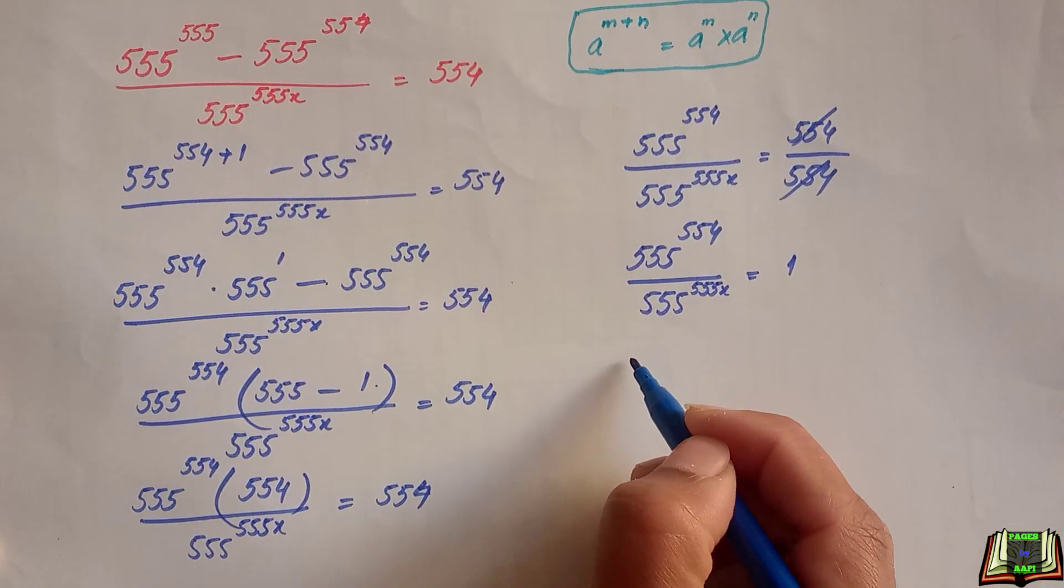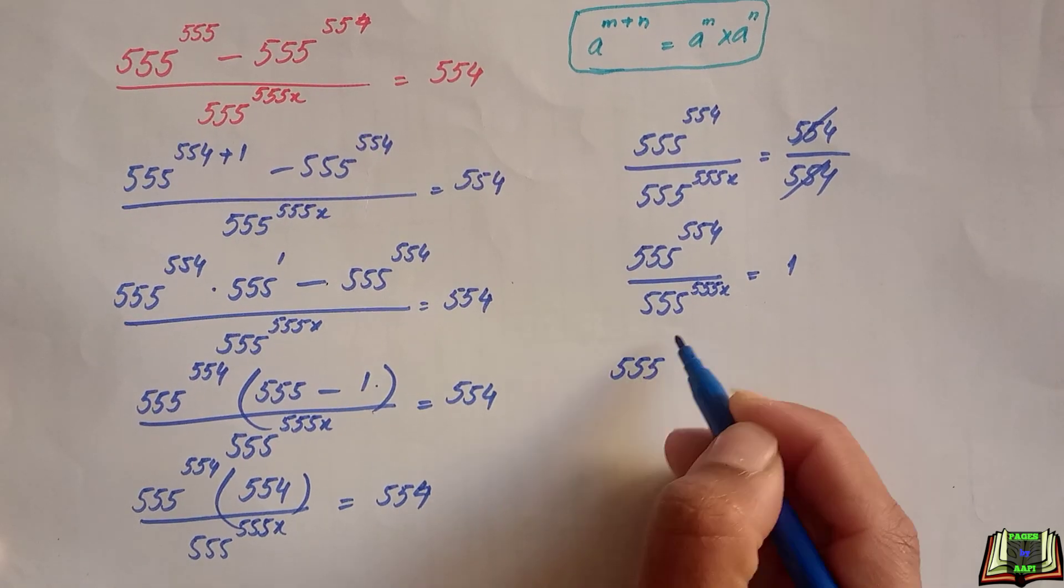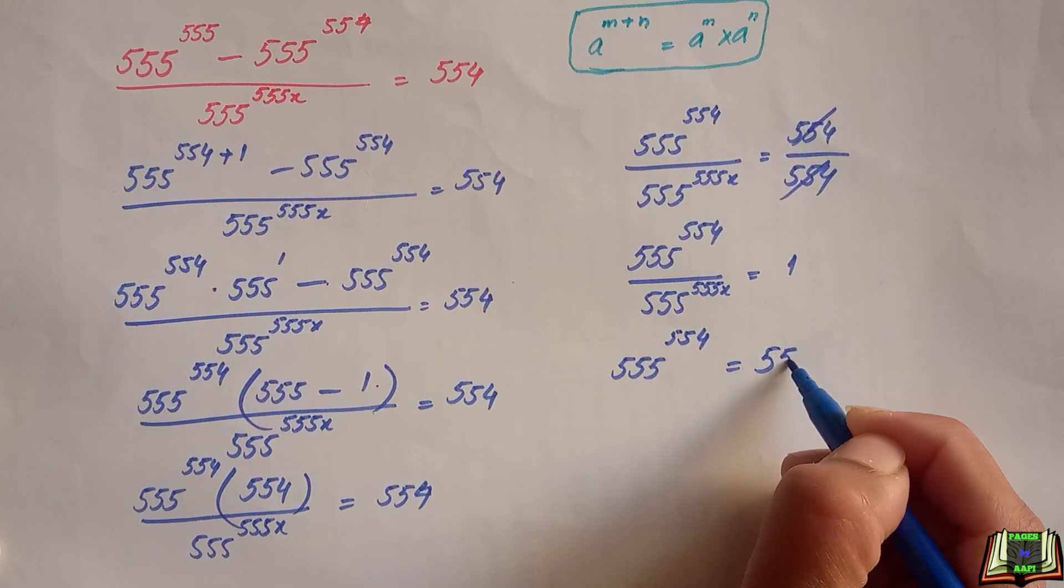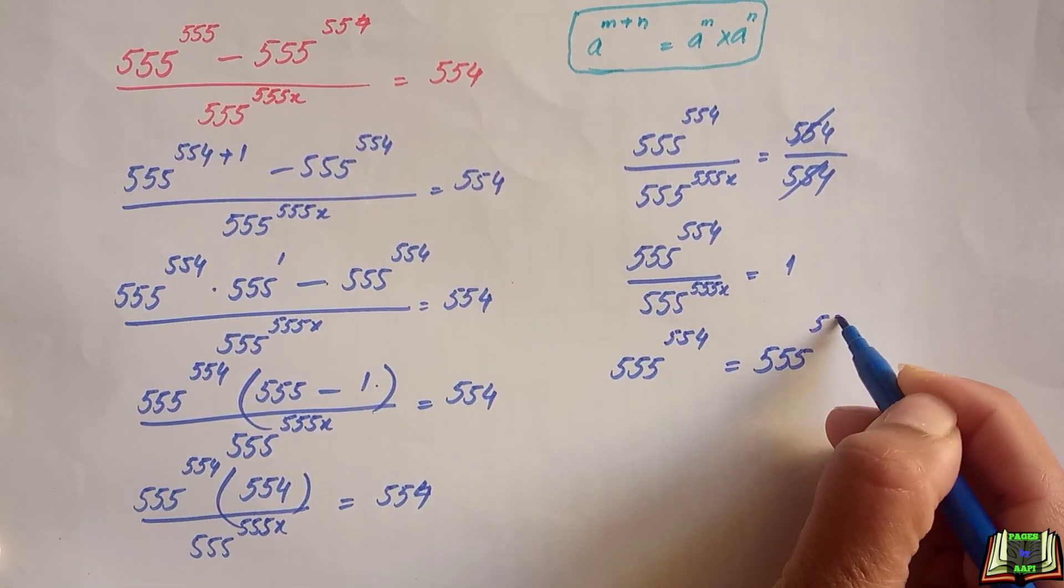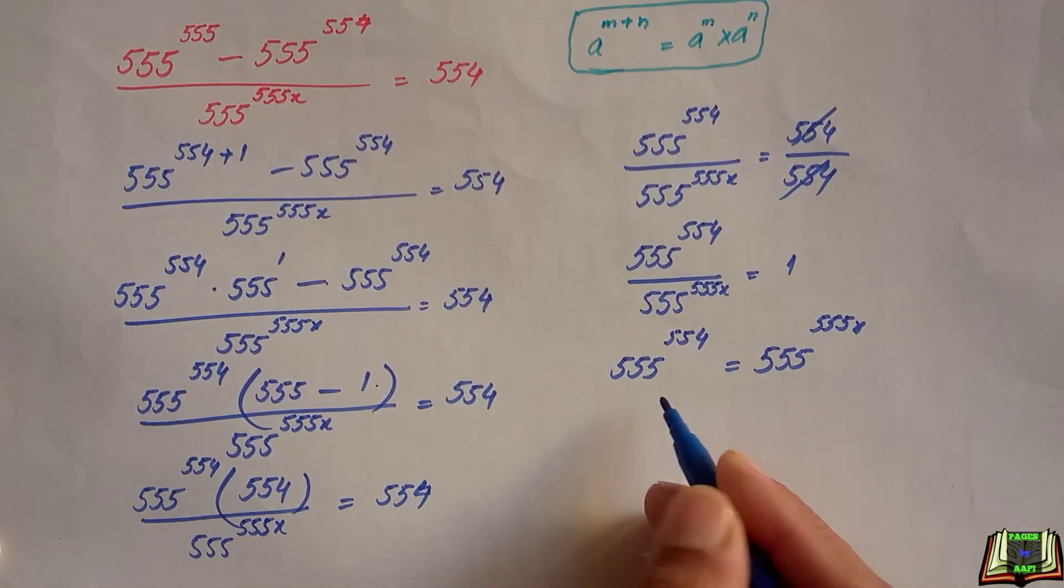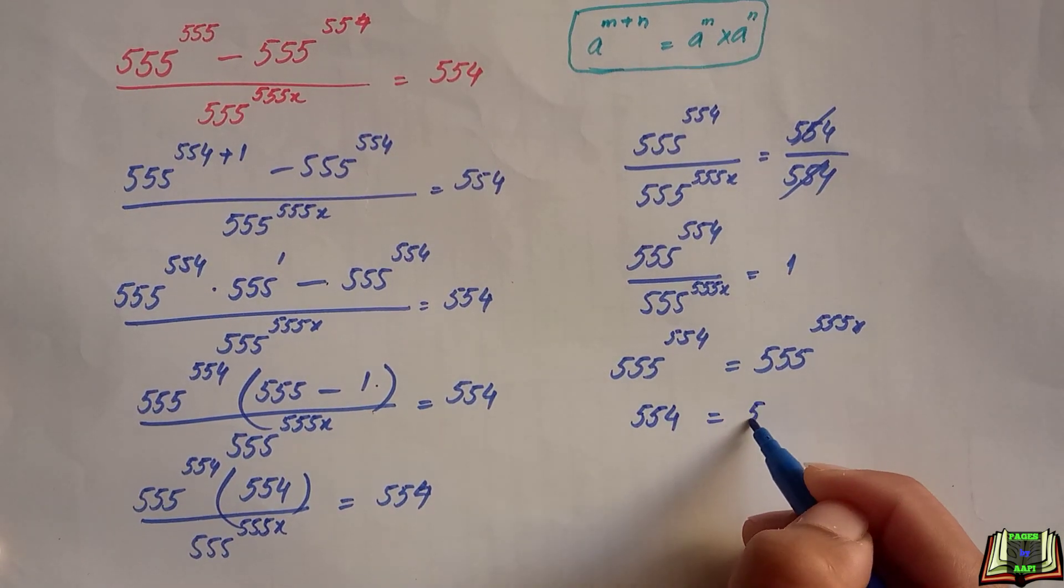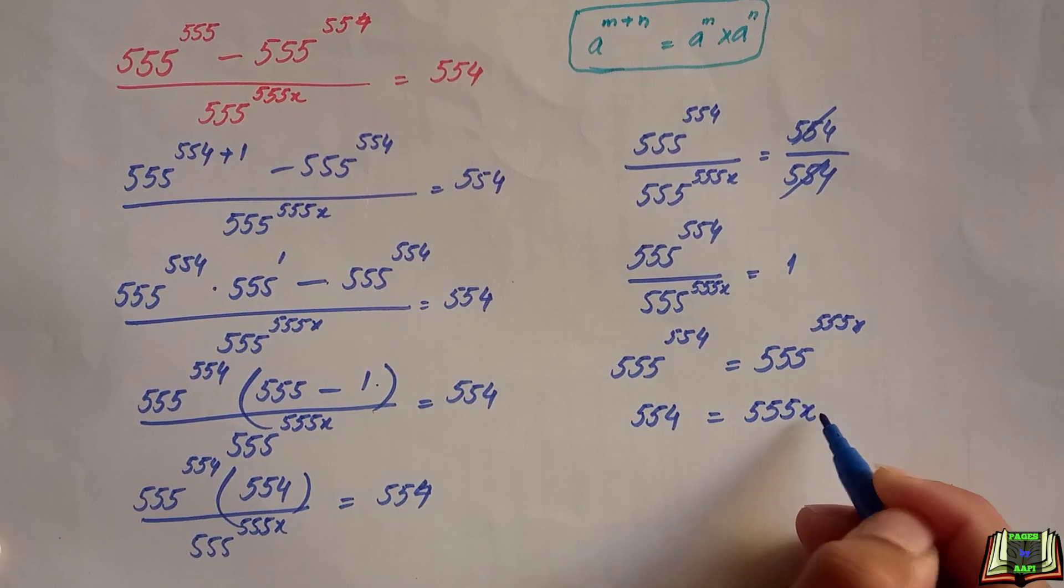Now by cross multiplication we have 555 raised to power 554 is equal to 555 raised to power 555x. If bases are same and equal we can equate the powers. We can say that 554 is equal to 555x.